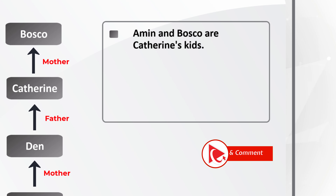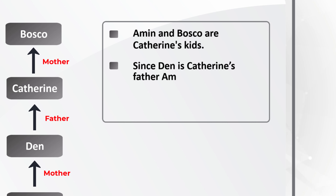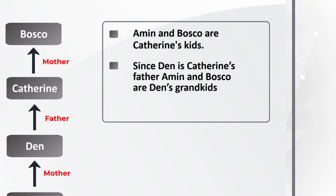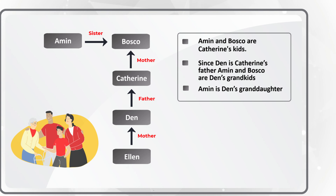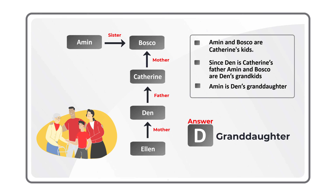Now let's look at the conclusions we can draw from this diagram. Amin and Baska are Catherine's children. Since Dan is Catherine's father, Amin and Baska are Dan's grandkids. Which means that Amin is Dan's granddaughter. So the correct choice here is Choice D, Granddaughter.